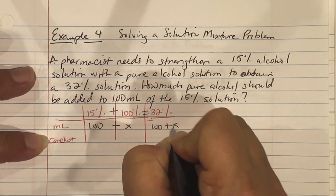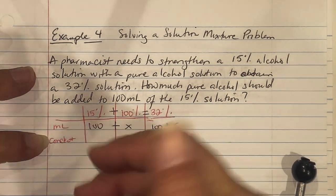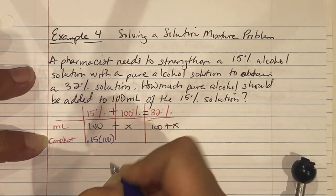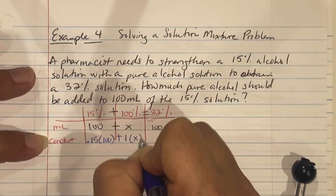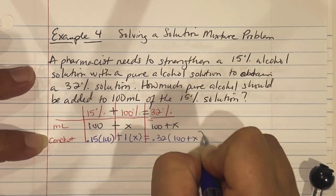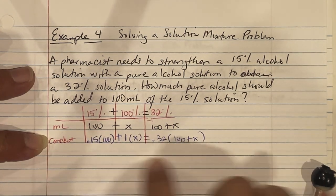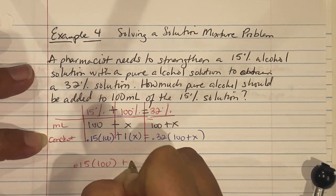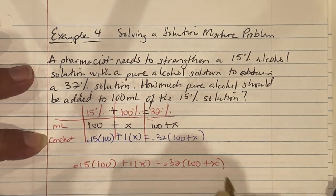Your percentages come down and they need to be in decimal form. So this is going to be 0.15 times 100 plus 100% is the same thing as 1 times X equals 0.32 times (100 plus X). So this last row is our actual equation. So we have 0.15 times 100 plus 1 times X equals 0.32 times (100 plus X).